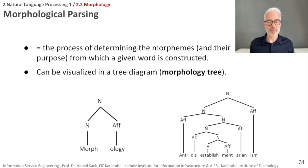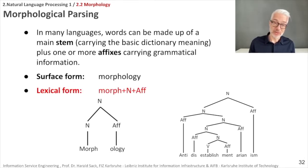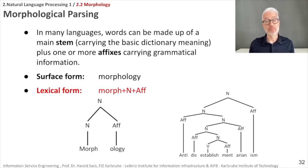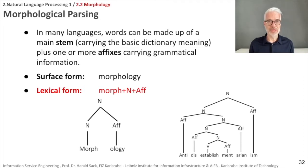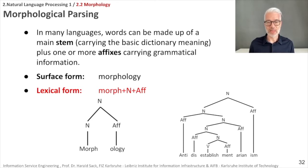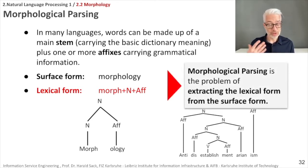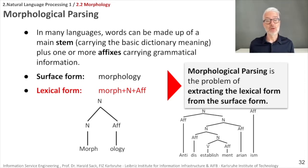In morphological parsing, words are made up of a main stem carrying the basic dictionary meaning plus one or more affixes carrying grammatical information. We distinguish the surface form — the word as it occurs in text — from the lexical form, which shows how the word was constructed. For example, 'morphology' has root 'morph' (a noun) with an affix added. The parse tree visualizes this lexical form.